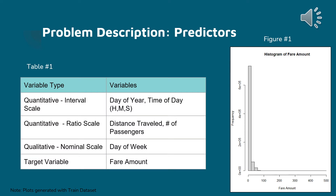Table 1 shows the breakdown of variable type and the actual variables. For our quantitative variable in the interval scale, we have day of the year and time of the day by hours, minutes, and seconds. For the quantitative variable ratio scale, we have distance traveled and number of passengers.